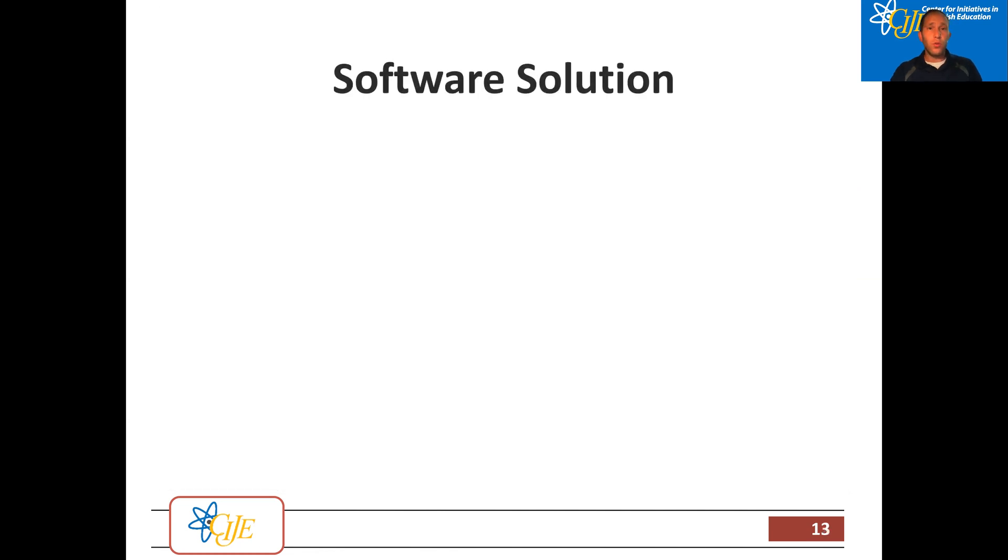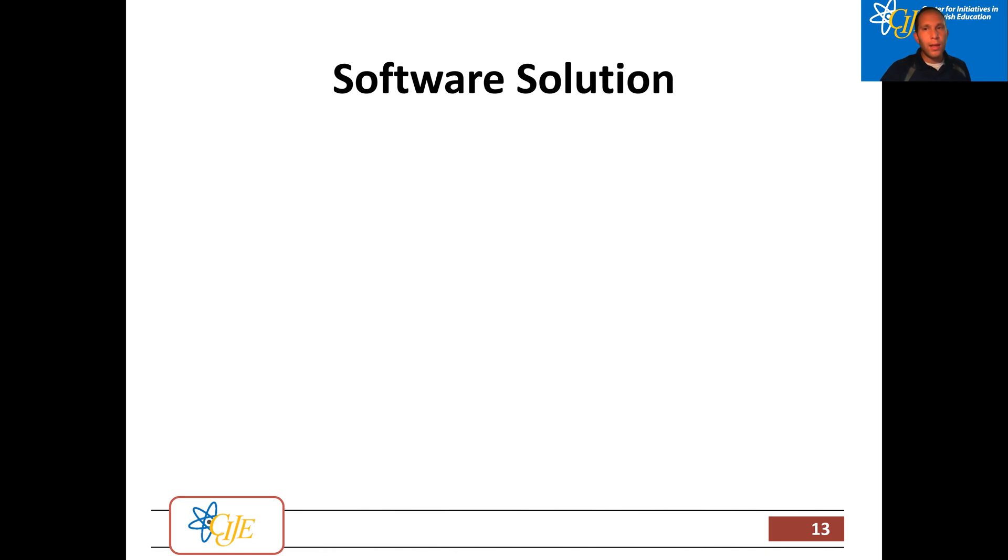Okay, so we're going to use a software solution. What we're going to do is we're going to keep track of when was the last time we updated our variable. Then regardless of how many bounces there are, we're not going to update our variable for a quarter of a second. So there could be one, two, three, a dozen different bounces. We're going to wait a quarter of a second, which is enough time for all the bouncing to settle down, before we allow our variable to be updated. Let's see how we do that.